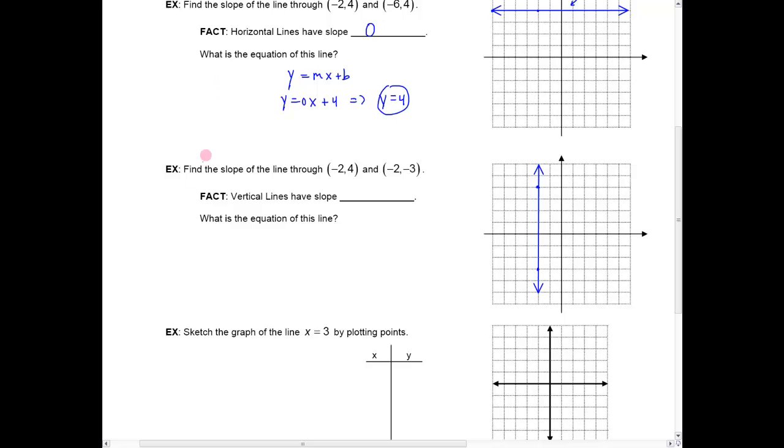And again, if you just think of finding the slope of that using our slope formula, let's take this y minus this y, 4 minus a negative 3, divided by the difference of the x's. So that gives me 7 over 0, and remember that division by 0 is undefined. And so, here, we see that vertical lines, because you have the same x-coordinate, are going to have slope that's undefined.